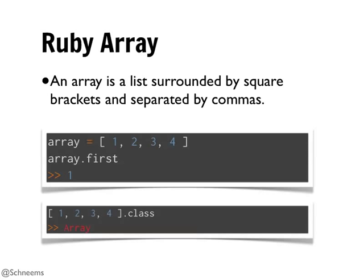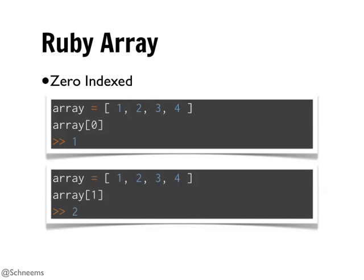Ruby arrays are going to be collections of objects, and these can be anything - strings, symbols, hashes, or even an array of hashes. We have a bunch of really handy operators on these arrays. For instance, you can call array.first to get the first element, and array.last gets the last. Arrays are zero-indexed: if you want the element at a specific index, you call array[0] to return the first element, or array[1] to return the second.